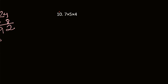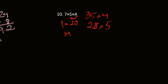Here's our last problem in this set: 7 times 5 times 4. I'm going to group 5 and 4 because 5 times 4 is equal to 20. 20 is easier to multiply with 7 — because 20 has a 0, you just do 7 times 2 to get 14, then add the 0, giving 140. If we multiplied using the other groupings, we would also get 140.